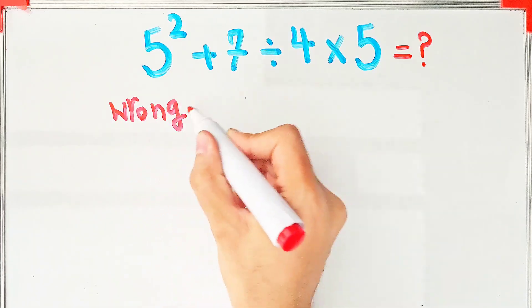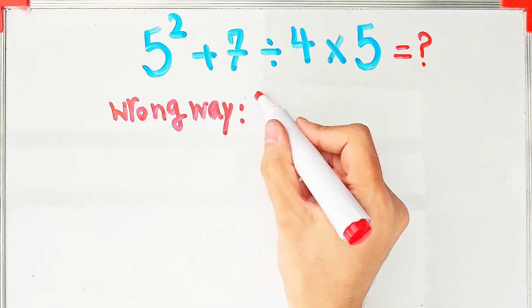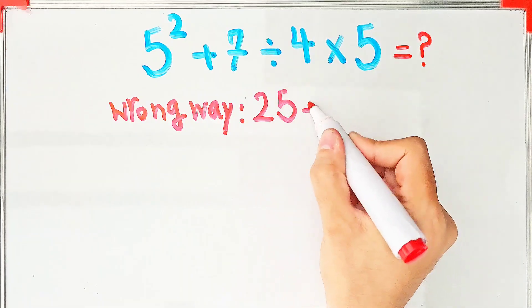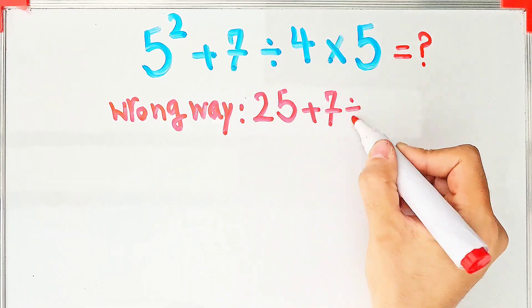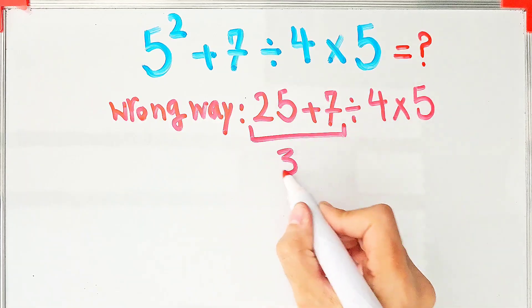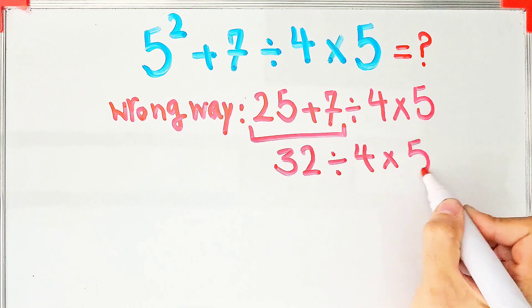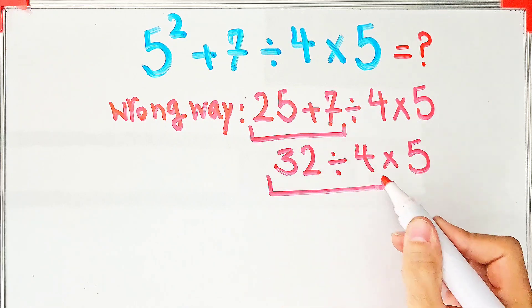people don't pay attention to the priority of mathematical operations. They start from the left and simplify: 25 + 7 ÷ 4 × 5. After that they do this addition: 25 + 7 = 32, 32 ÷ 4 × 5. 32 divided by 4 equals 8,